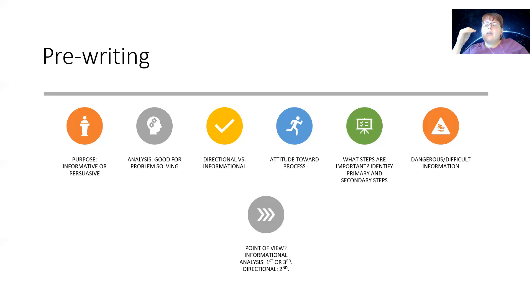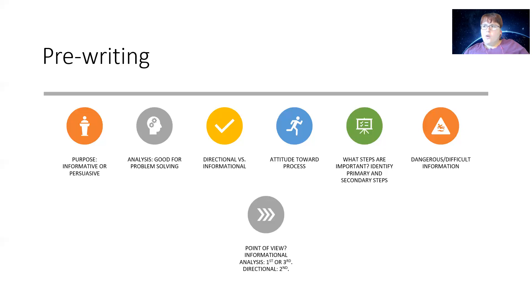Think about point of view. If you're doing informational analysis about what you do, it can be first person, or third person using 'he,' 'she,' 'one.' If you're doing directional writing so someone can follow along and repeat the process, you can use second person — 'you,' 'your.' This is the only time it's acceptable to use second person in a formal essay. Otherwise, do not address the reader as 'you' unless the essay is directional.